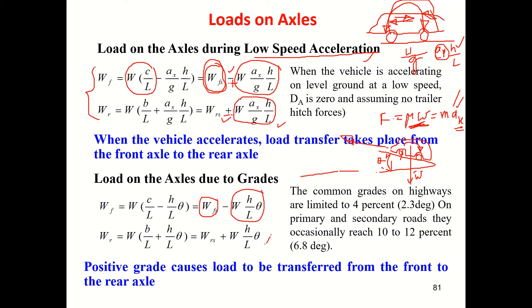If the gradient is too large, the vehicle will topple over. The same way, if it is a down gradient, the signs reverse — the front gains load and the vehicle could topple forward.